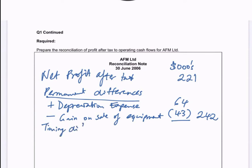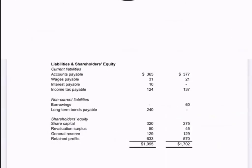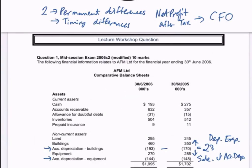Continuing onto timing differences. Where do I find my timing differences? From the balance sheet. I use a shortcut rule I call CLICCLAD — it stands for: Current Liability Increasing, then you Add; Current Asset Decreasing, then you Add. If you see the opposite, you subtract. This is just a shortcut to help work out how to remove the non-cash amounts from net profit after tax.